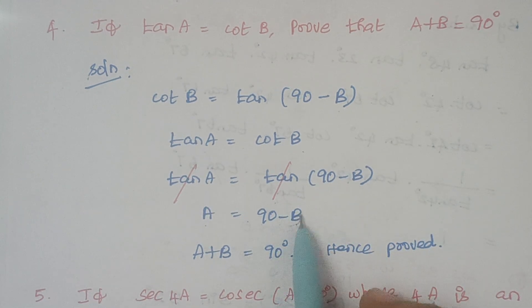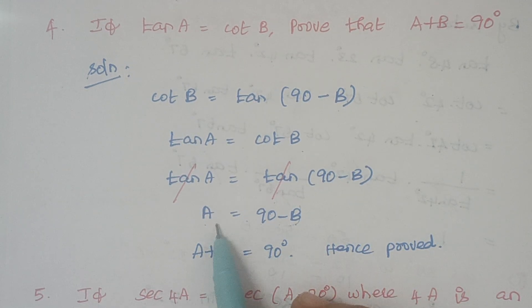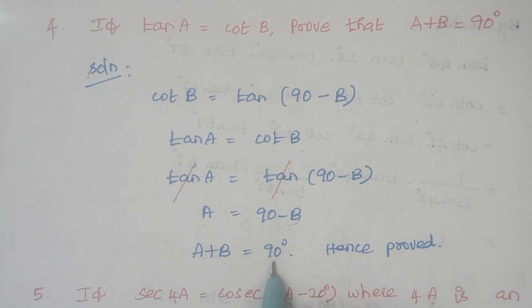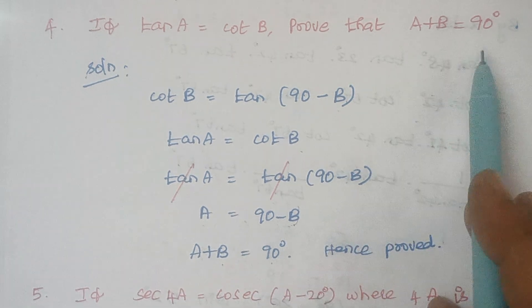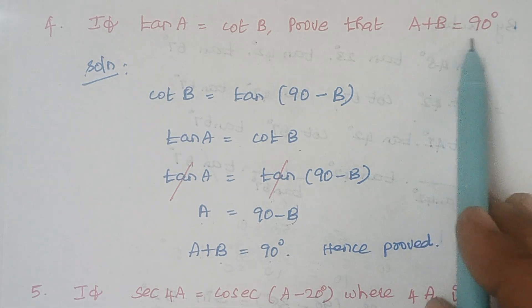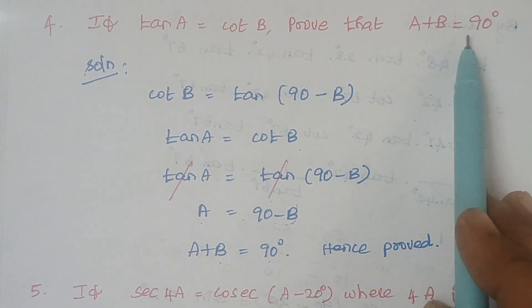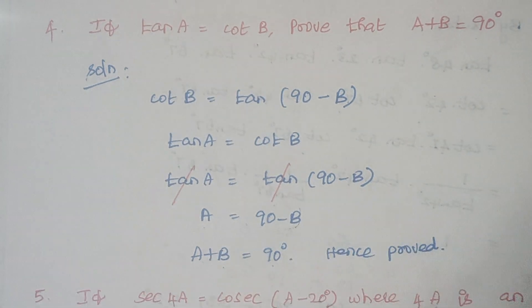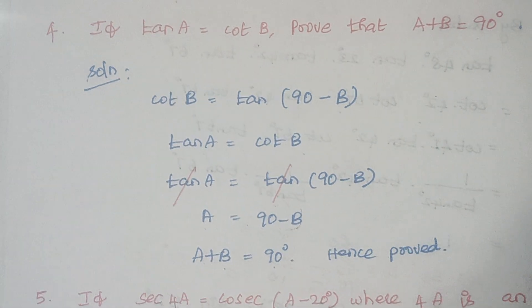These two tans cancel each other and A is equal to 90 minus B. When I move minus B to the left hand side it becomes plus, therefore A plus B is equal to 90 degrees. This is what we had to prove — hence proved.